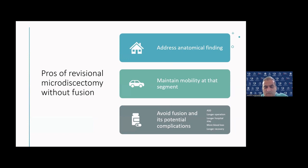What are the pros of the revisional microdiscectomy without fusion? Well, I would argue that we have found an anatomical finding — we have a herniated disc or a disc prolapse, and we're going to address that again. Secondly, we can maintain mobility at that segment, which is important if someone is a young patient with a lot of physical activities or if they like sports and don't want to be limited in the flexibility of their lumbar spine. The third thing to consider is that if we avoid the fusion, we also avoid its potential complications, including adjacent segment degeneration and adjacent segment disease, a longer operation, longer hospital stay, more blood loss, and a longer recovery.